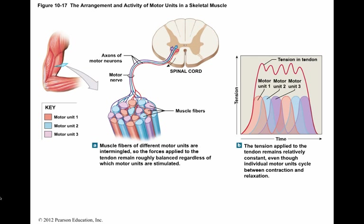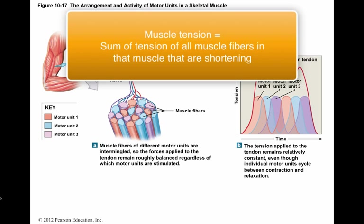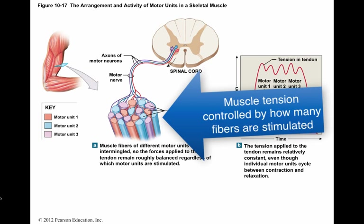When sarcomeres shorten in a contraction, they shorten the muscle fiber. This shortening exerts tension on the connective tissue fibers attached to the muscle fiber. The tension produced by an individual muscle can vary. The amount of tension produced by the muscle as a whole is the sum of the tensions generated by individual fibers, since they are all pulling together. For this reason, the amount of tension produced by a skeletal muscle can be controlled by the number of muscle fibers it stimulates.